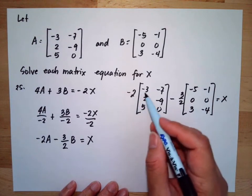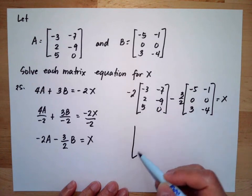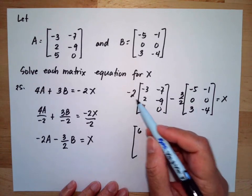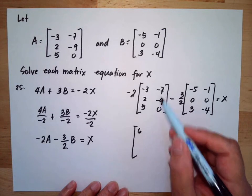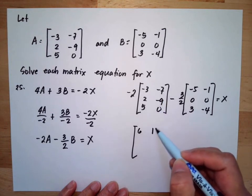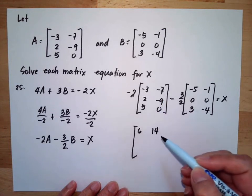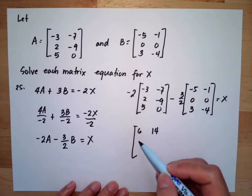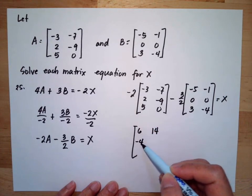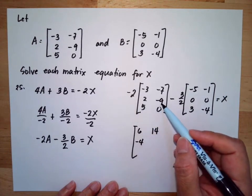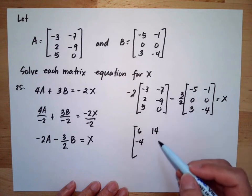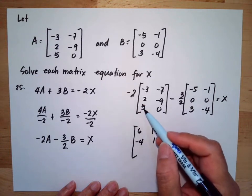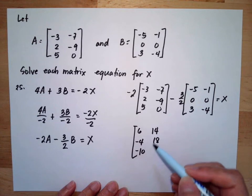Computing negative 2 times matrix A: negative 2 times negative 3 equals 6; negative 2 times negative 7 equals positive 14; negative 2 times negative 2 will be negative 4; negative 2 times negative 9 equals 18; negative 2 times 5 equals negative 10; negative 2 times 0 is 0.